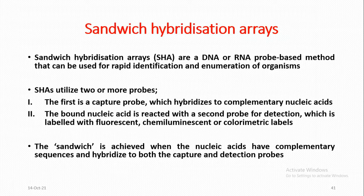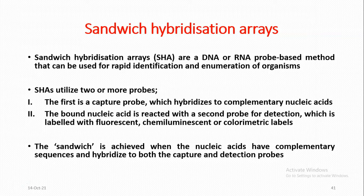Sandwich Hybridization Arrays (SHA) are a DNA or RNA probe-based method that can be used for rapid identification and enumeration of organisms. SHAs utilize two or more probes: (1) a capture probe, which hybridizes to complementary nucleic acids; and (2) a bound nucleic acid reacted with a second probe for detection, which is labeled with fluorescent, chemiluminescent, or colorimetric labels. The sandwich is achieved when the nucleic acids have complementary sequences and hybridize to both the capture and detection probes.